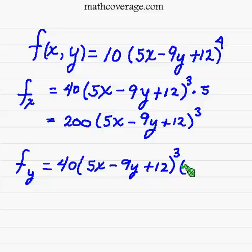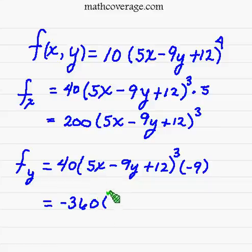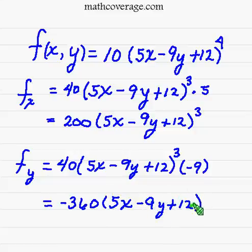Cleaning this up, negative 9 times 40 is negative 360. And then we have 5x minus 9y plus 12, all raised to the third power.